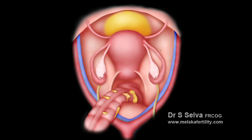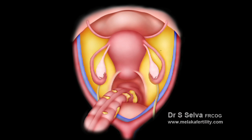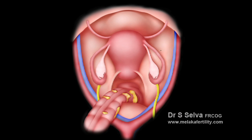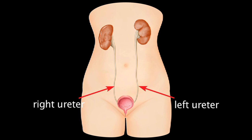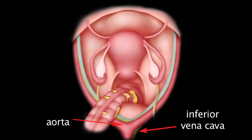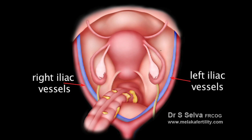In front or anterior of the uterus is the urinary bladder. Behind or posterior to the uterus is the rectum. A slippery membrane called the peritoneum covers the whole pelvis and abdomen. Beneath the peritoneum, on either side of the pelvis, runs the ureters — small tubes that carry urine from the kidney to the bladder. Large blood vessels are present on both sides of the pelvis, carrying blood from the heart to both the legs and back.